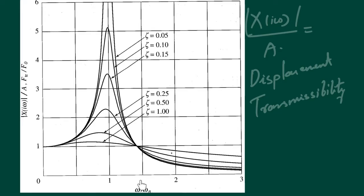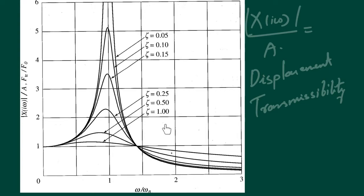Whenever ω/ωn is less than √2, regardless of the amount of damping present, the displacement transmissibility is greater than one. That means the base excitation is getting magnified. If you have a very precise instrument, this is not the regime where you want to operate.